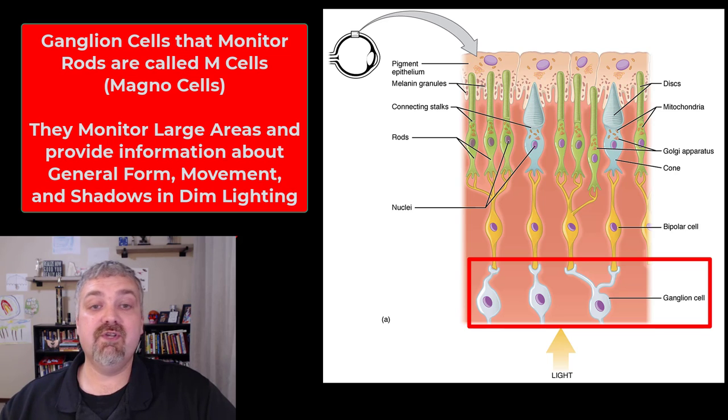The ganglion cells that monitor your rods are called M cells or magno cells. They're large, so they're not very localized, which means you just get general information about the general form of something, motion, shadows, but not clear vision.